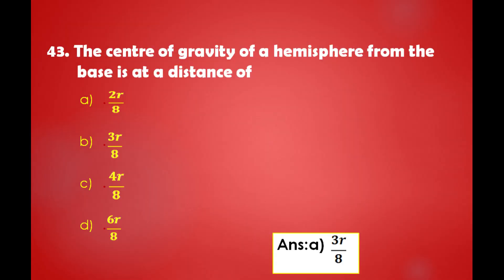The centre of gravity of a hemisphere from the base is at a distance of: a) 2r/8, b) 3r/8, c) 4r/8, d) 6r/8. The answer is: the centre of gravity of a hemisphere from the base is at a distance of 3r/8.